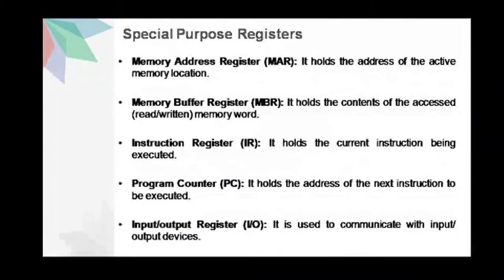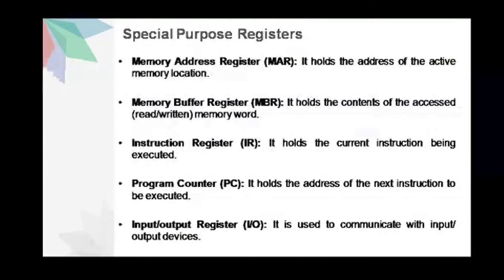Let us look at the different special purpose registers. The first one is the Memory Address Register or MAR, which holds the address of the active memory location. Another special purpose register is the Memory Buffer Register or MBR, which holds the contents of the accessed memory word. A third special purpose register is the Instruction Register, which holds the current instruction being executed. Then we have the Program Counter or PC, which holds the address of the next instruction to be executed. Lastly, we also have the Input/Output register or I/O register, which is used to communicate with input/output devices.